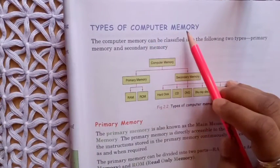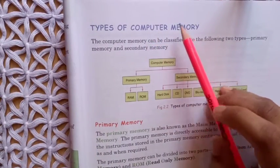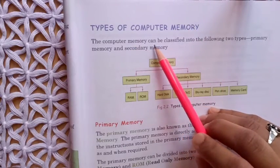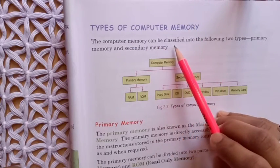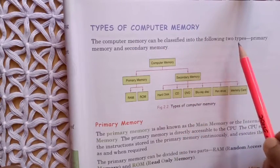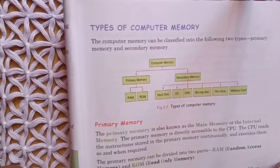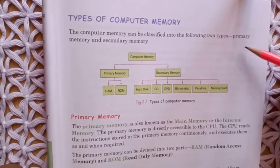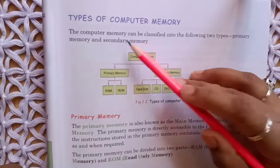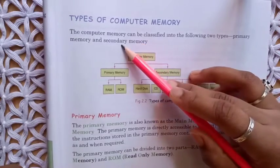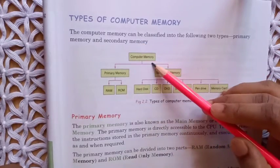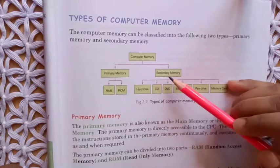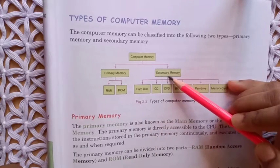Types of computer memory. The computer memory can be classified into the following two types. Memory is classified in two types: primary memory and secondary memory. Computer memory is divided into two types, that is primary and secondary.